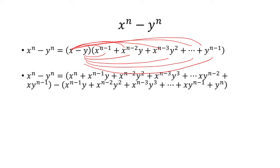So first, x times x to the n minus 1 will be x to the n. x times x to the n minus 2 times y is x to the n minus 1 times y. And you just keep doing that until you reach the n here. So you have x times y to the n minus 1, which is over here.